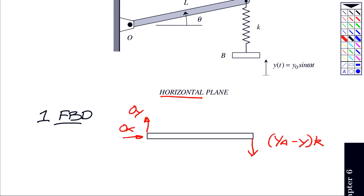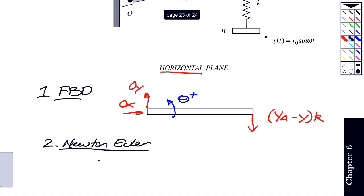The problem says that theta is defined in a positive sense in a counterclockwise direction. So whenever I write down my Newton-Euler equations, I'm going to sum my moments about O. I need to abide by the sign convention that theta is positive in a counterclockwise sense, therefore the moments are also.